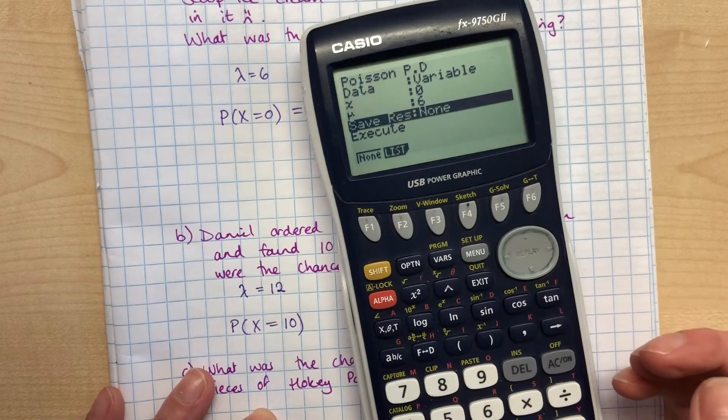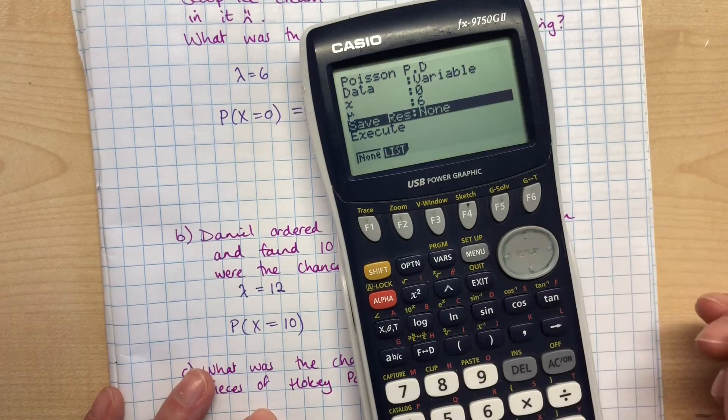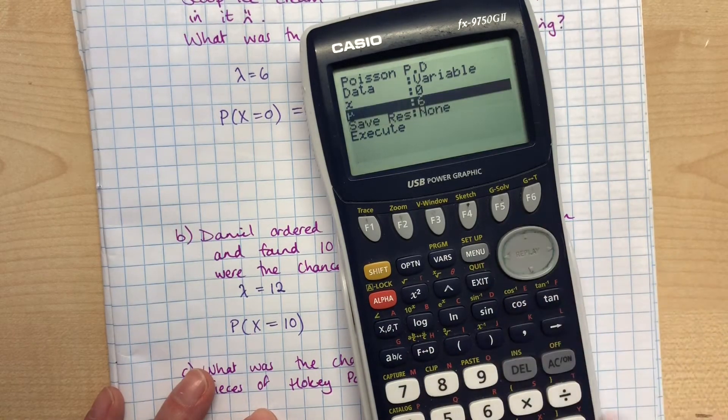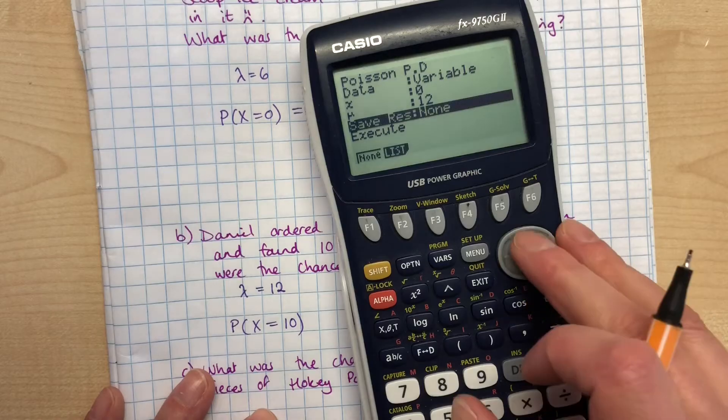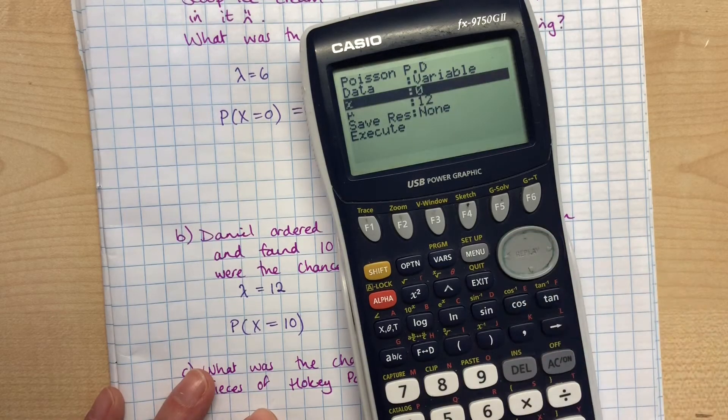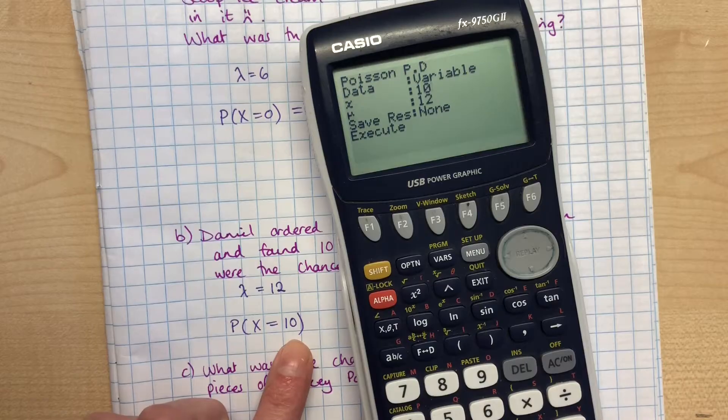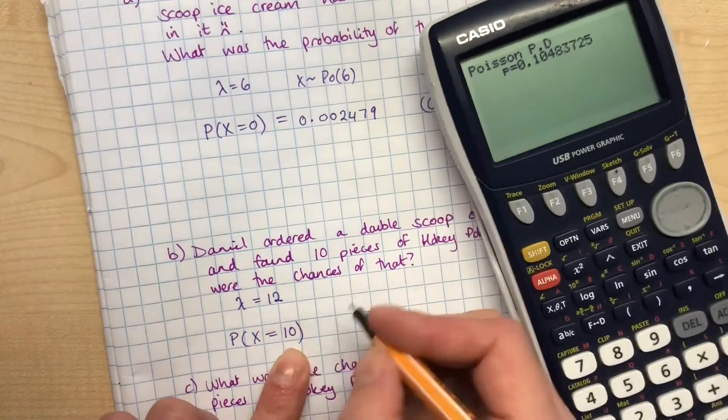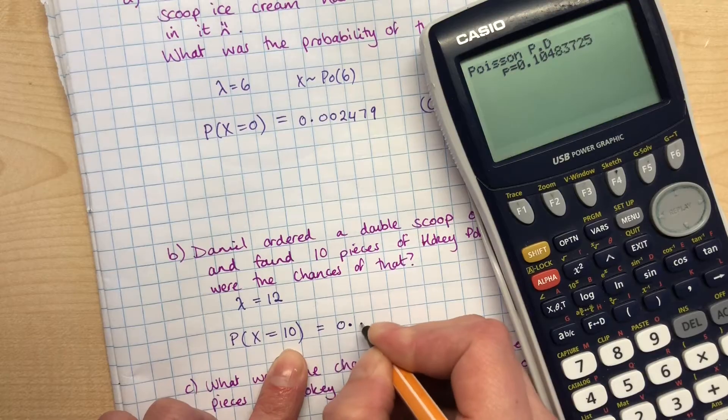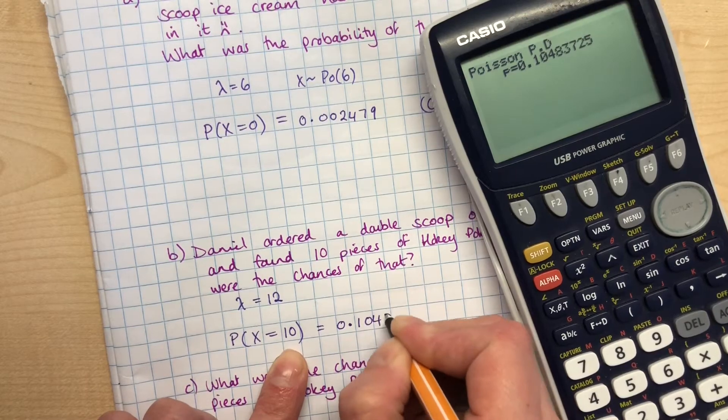Remember, with a Poisson distribution that just works proportionally - so if you double the scoop you're going to double your lambda. So that lambda is now a 12, and our X value is 10. It's the chance that we got 10 pieces of Hokey Pokey. So if we enter that, we get our probability is equal to 0.1048.